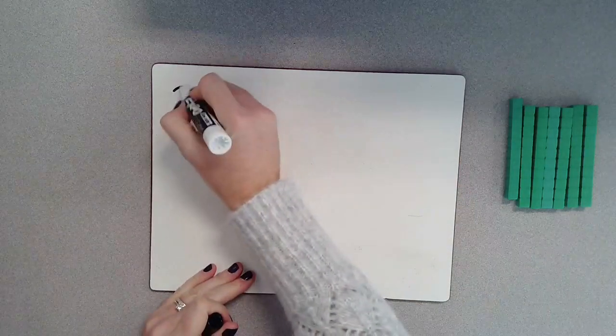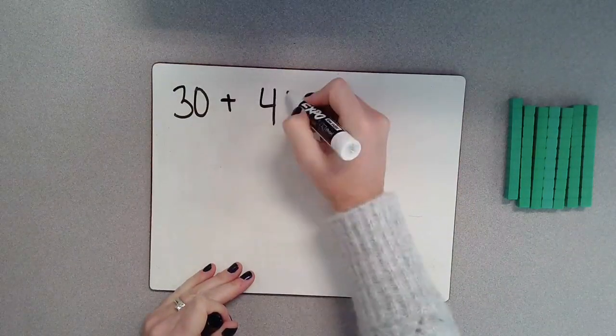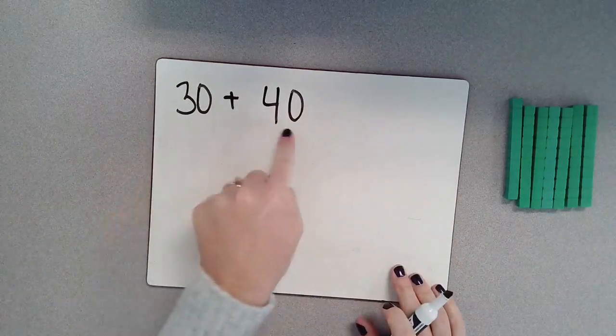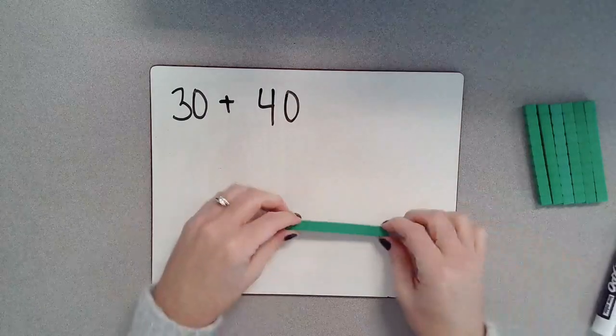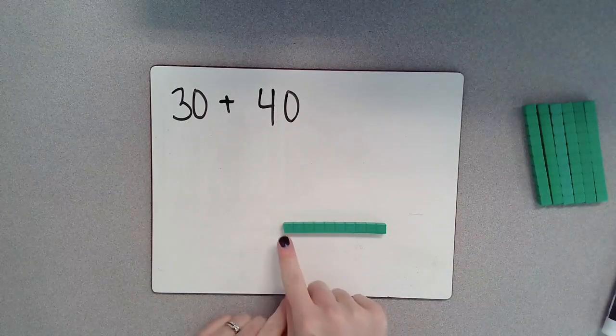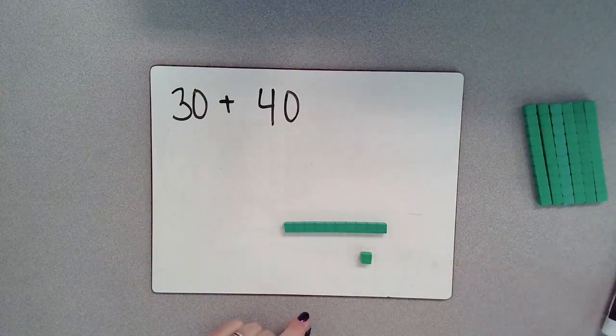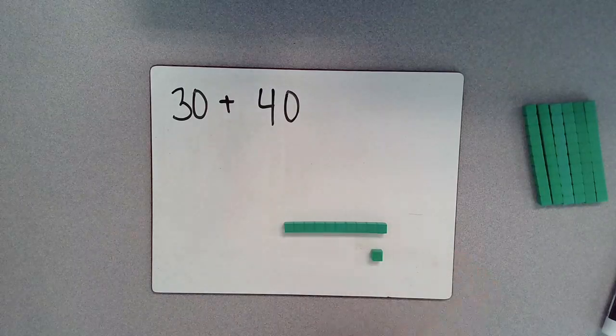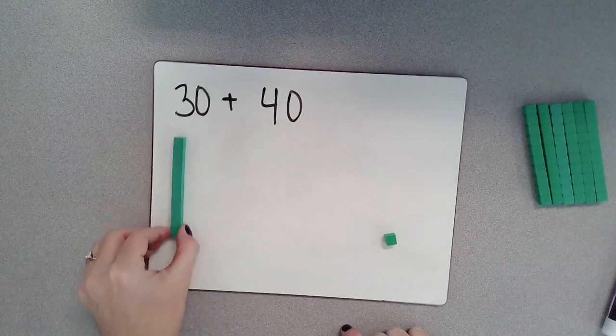Our first problem here is 30 and 40. So we're going to try and find 30 plus 40. Let's get out our place value blocks. Now, this one block here, it's not just worth 1, it's actually worth 10 because it does have 10 of these units in here or cubes. So this is worth 1, but this right here is worth 10.